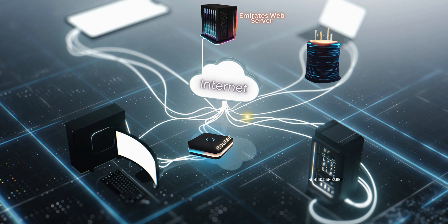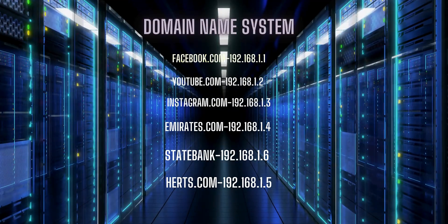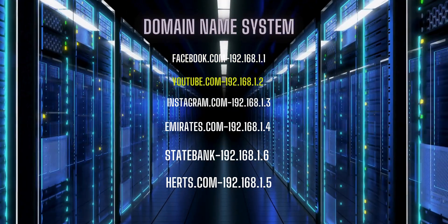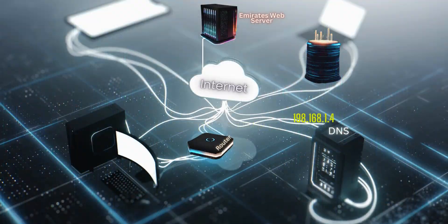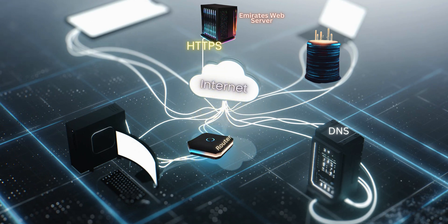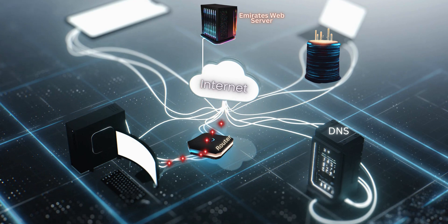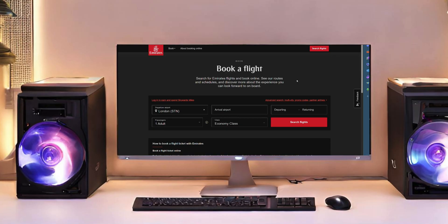When you search for emirates.com, your browser sends a request to the DNS server to find the particular IP address linked with emirates.com. The DNS server looks for the matching IP address. Once found, it returns the IP address to your computer. Your computer then sends an HTTP request to the Emirates web server, and in response, the Emirates server sends web pages to your computer. Now you can access the entire Emirates website on your computer.